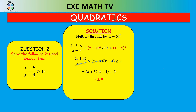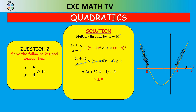Now that it's in the form Y greater than or equal to zero, we find the two roots. Solving X plus five equals zero gives X equals negative five; solving X minus four equals zero gives X equals four. We want the portion of the graph above the Y-axis, so X is less than or equal to negative five, or X is greater than four.